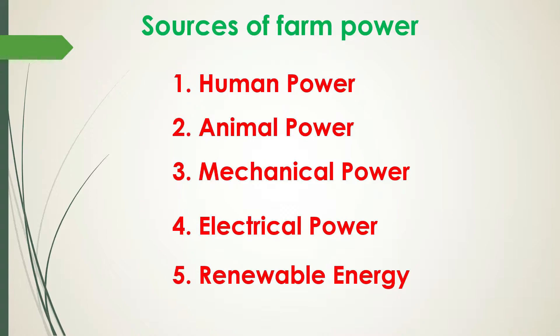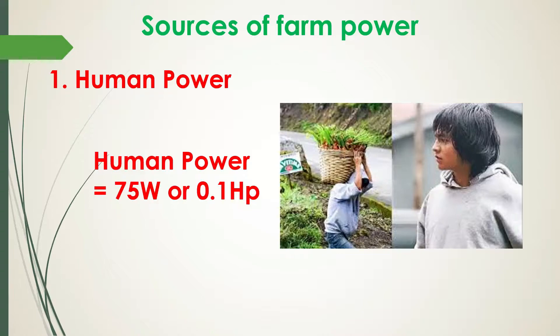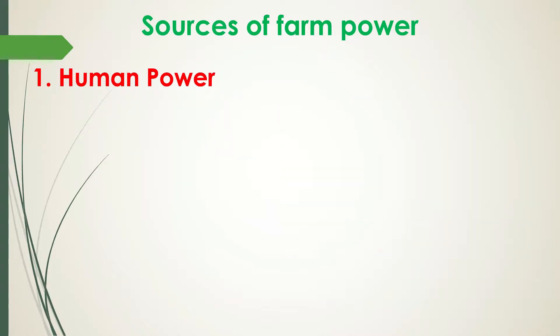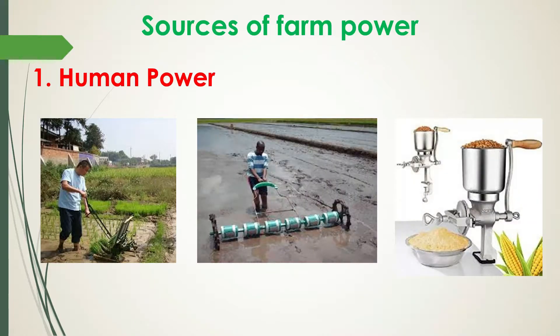Let's talk about human power. On an average, a man can develop maximum power of about 75 watts or 0.1 HP for doing work. This human power is very important as a source of power for operating small implements such as manual planter, seeders, corn mill, and other agricultural manually operated machines.